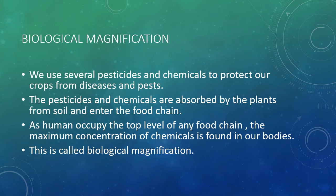Biological magnification: We use several pesticides and chemicals to protect our crops from diseases and pests. These pesticides and chemicals are absorbed by plants from the soil and enter the food chain. As humans occupy the top level of any food chain, the maximum concentration of chemicals is found in our bodies. This is called biological magnification.